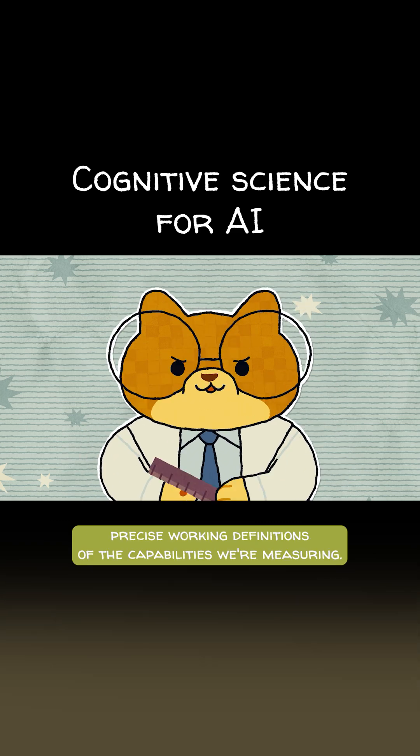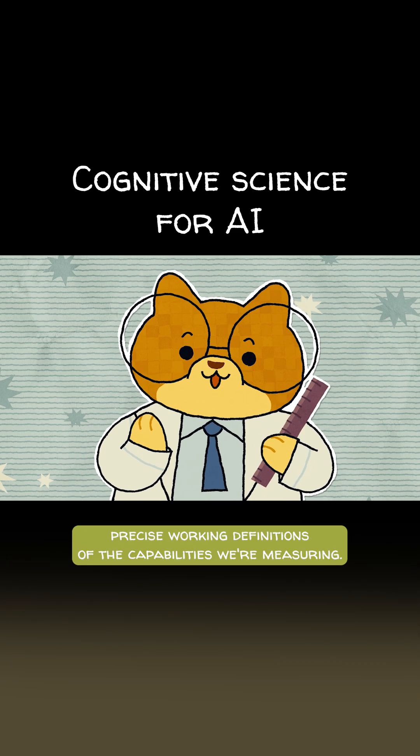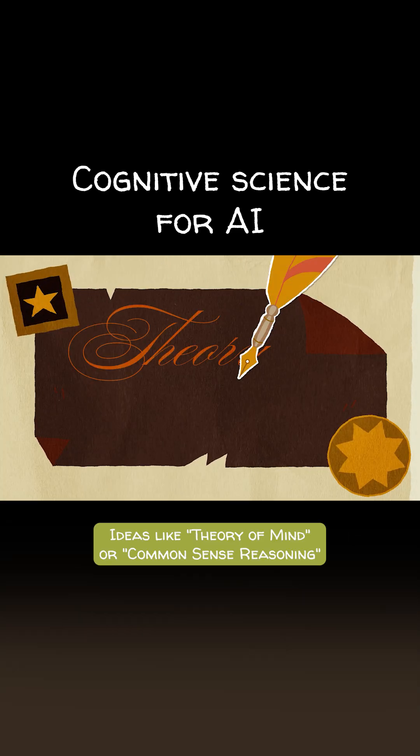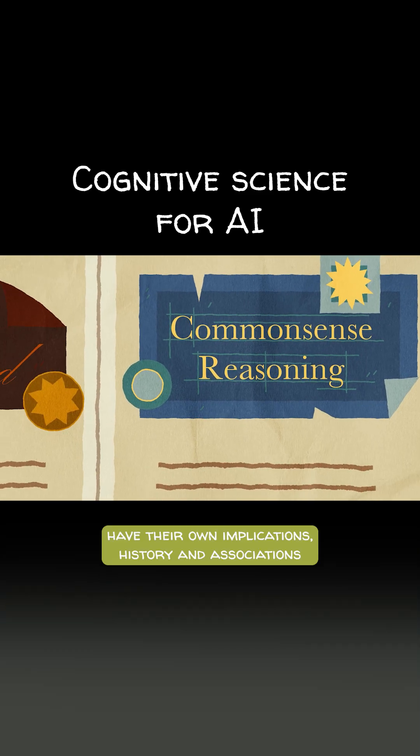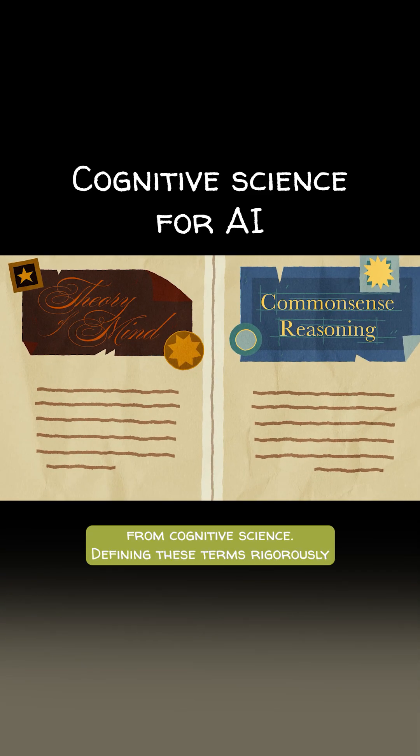We also want specific, precise working definitions of the capabilities we're measuring. Ideas like theory of mind or common sense reasoning have their own implications, history, and associations from cognitive science.